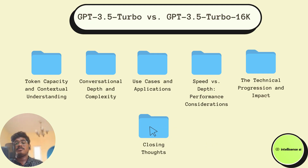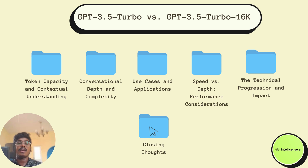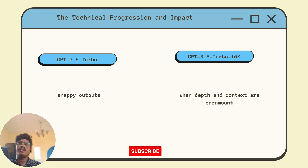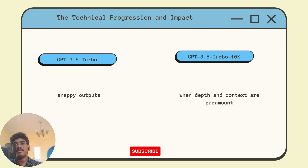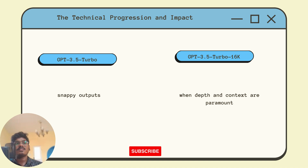Wrapping up: GPT-3.5 and GPT-3.5 Turbo 16k are monumental strides in AI language models. Choose GPT-3.5 Turbo when you need snappy outputs, and choose GPT-3.5 Turbo 16k when depth and context are paramount — you'll get in-depth details in the content.